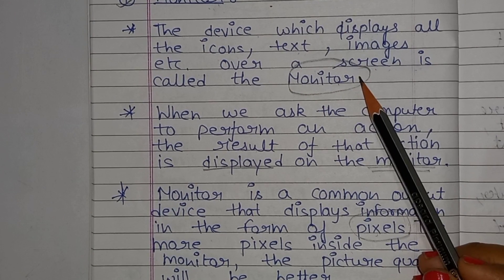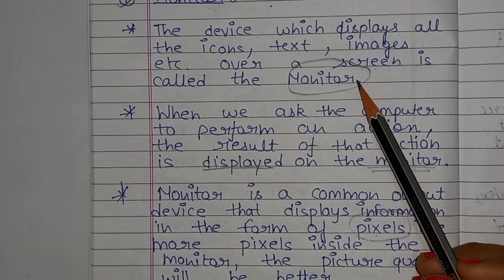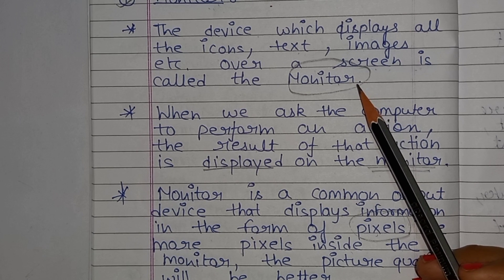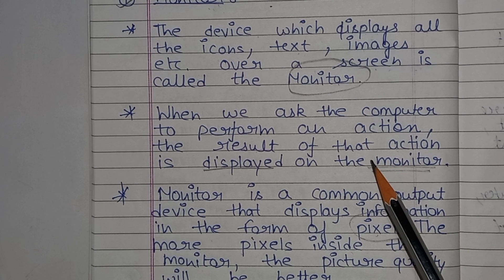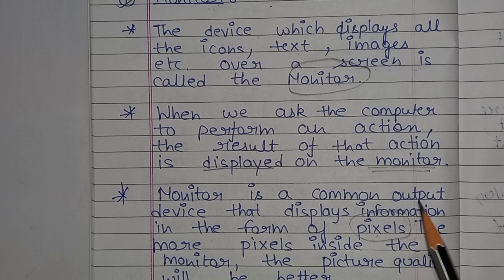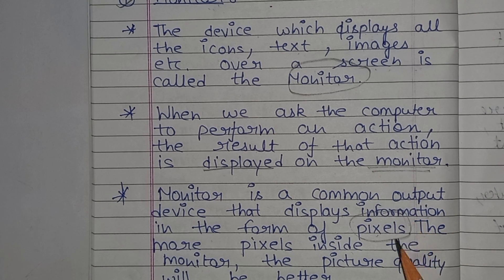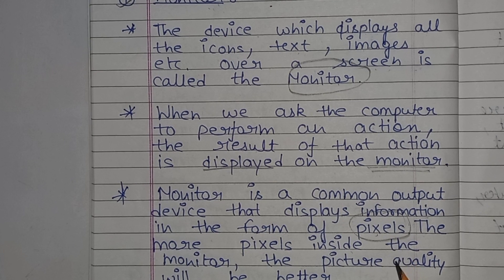The monitor is a device which displays all items on screen — icons, tags, images. When we want to see a result, the result is shown on the monitor, displayed in pixel form. The more pixels, the better the picture quality. That is the monitor.